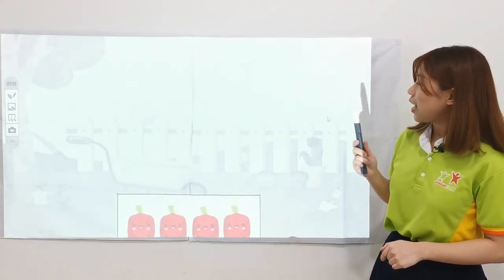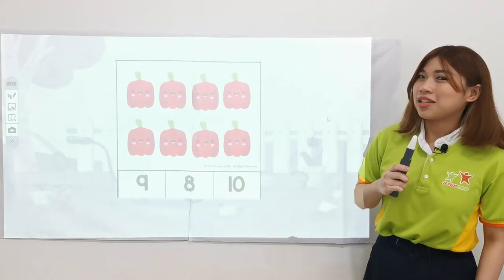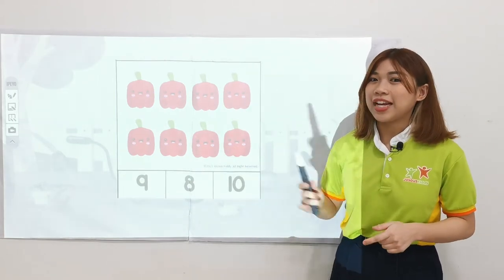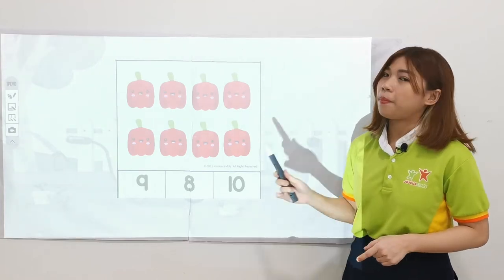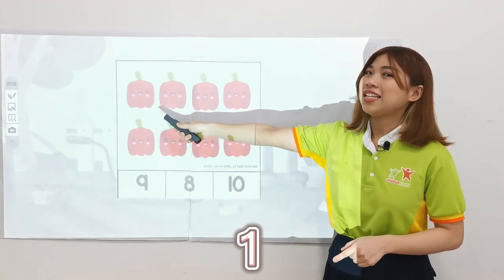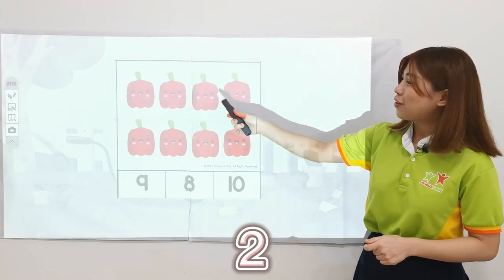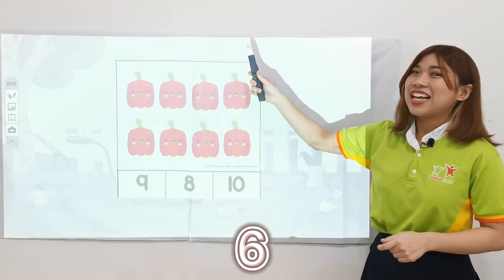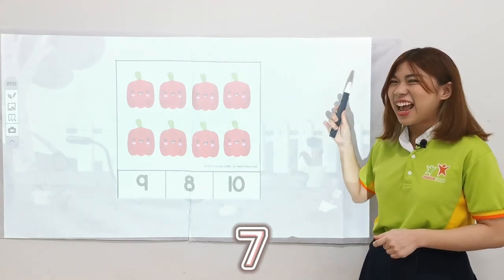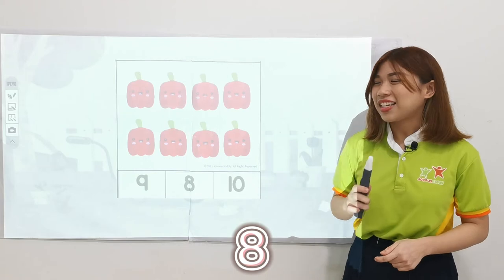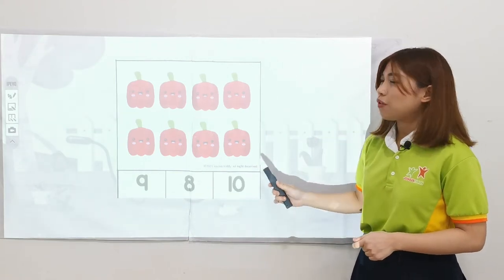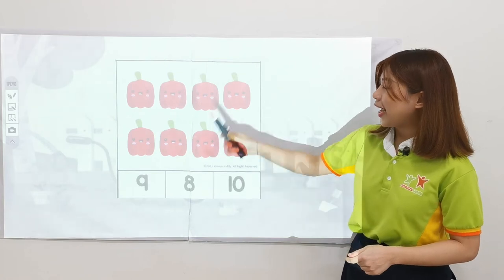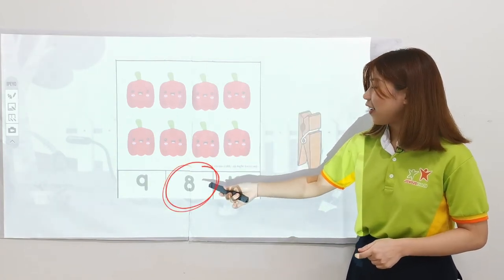Okay! Next one! Ooh, it's a lot! But don't worry! We can do this together! This is a red colour bell pepper! And let's see how many bell pepper do we have? 1, 2, 3, 4, 5, 6, 7, 8! We have 8 bell peppers here! And let's find which one is number 8! Hmm, number 8 is here!